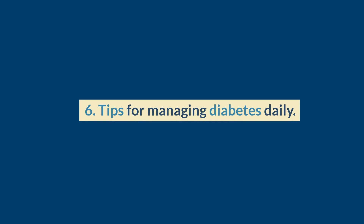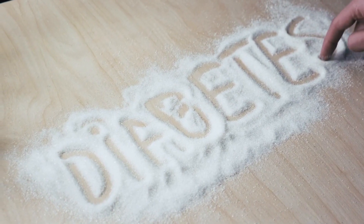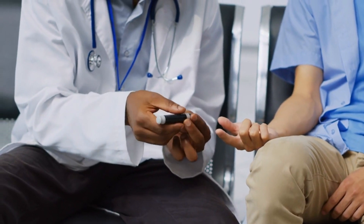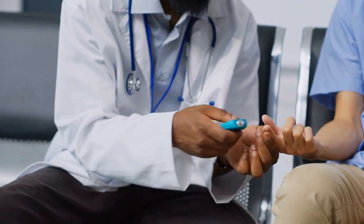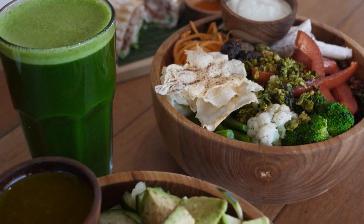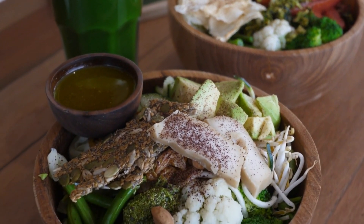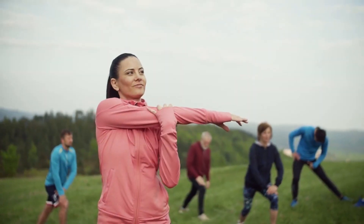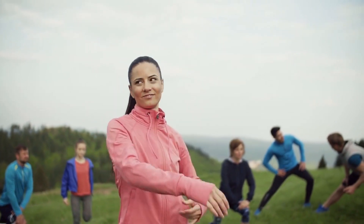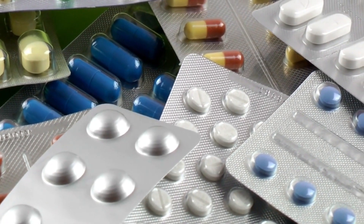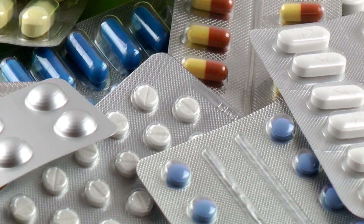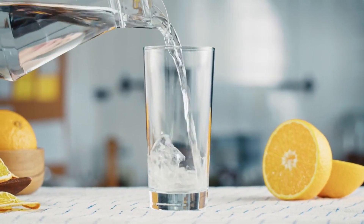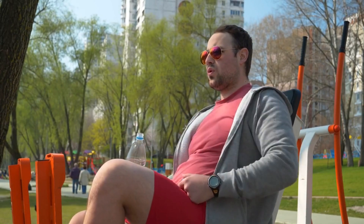Tips for managing diabetes daily. Here are 7 simple tips to help you manage diabetes on a daily basis. First, make sure to monitor your blood sugar levels regularly — this will give you valuable insights into how different foods and activities affect your glucose levels. Second, maintain a healthy diet that is balanced and full of whole grains, lean proteins, fruits, and vegetables. Third, stay active; regular exercise not only helps control blood sugar levels but also improves overall health. Fourth, don't forget to take your medications as prescribed by your healthcare provider — it's important to stay consistent with your medication regimen. Fifth, stay hydrated by drinking plenty of water throughout the day, as this helps flush out toxins and keeps your body functioning optimally.